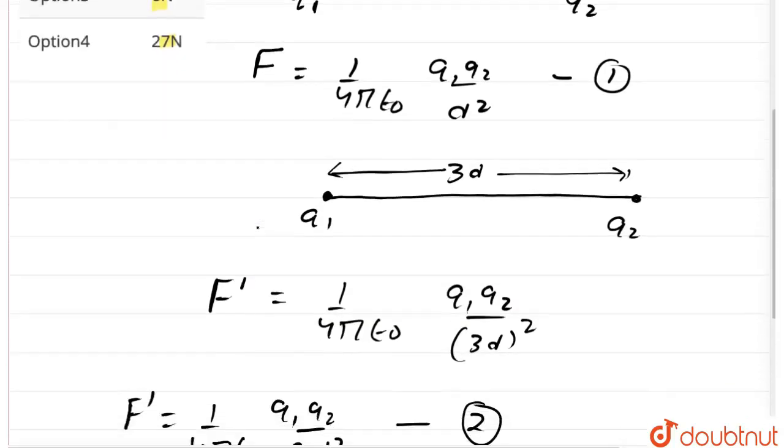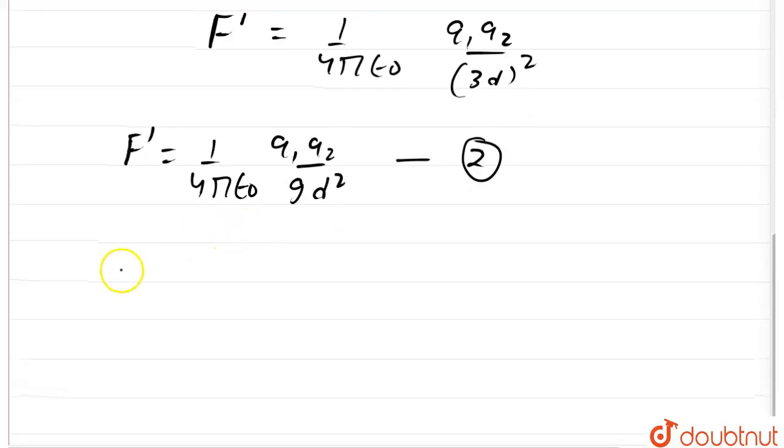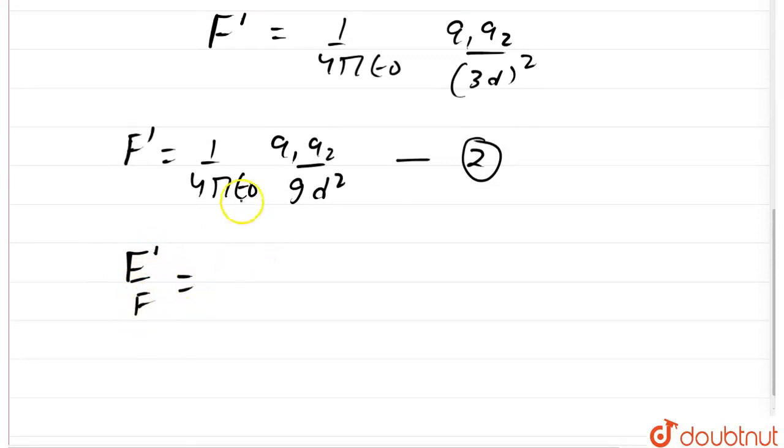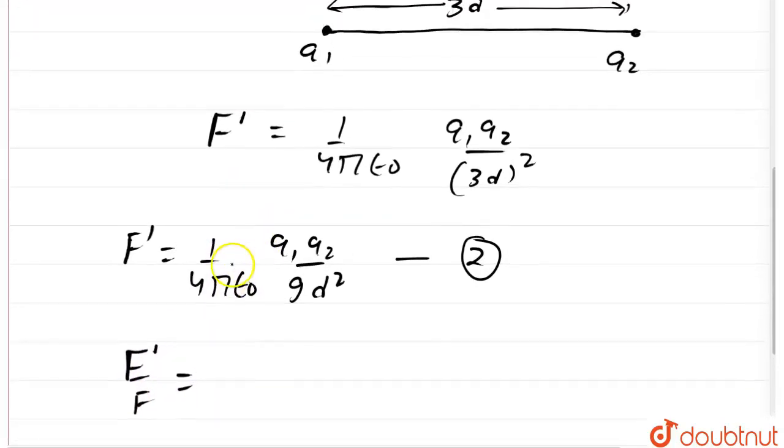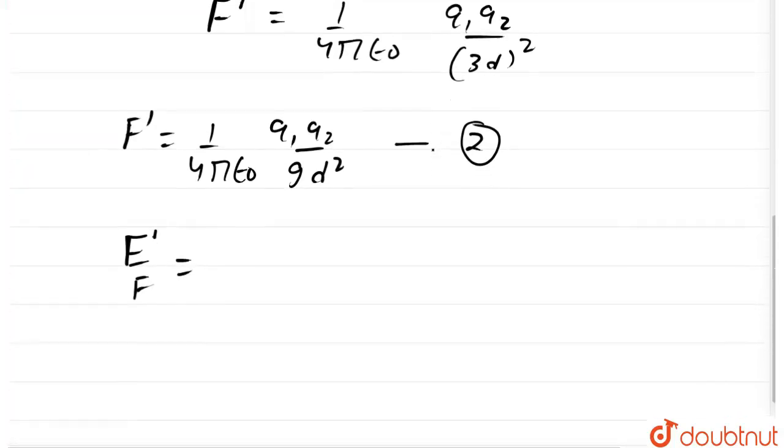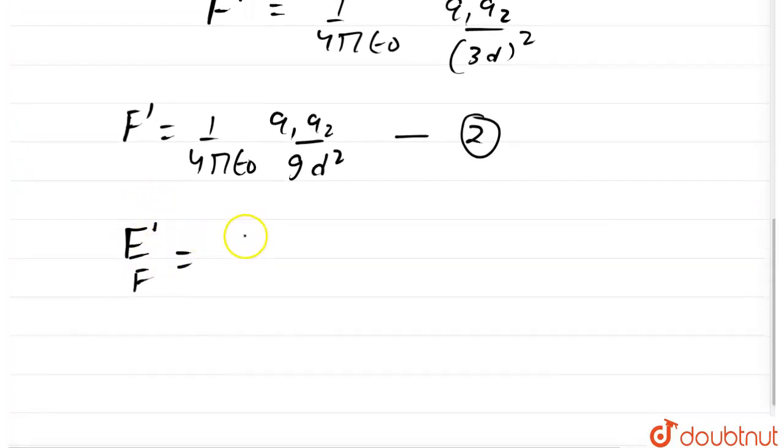Now, dividing both 1 and 2 we get, dividing 2 by 1 we get f dash upon f is equal to, now this 1 upon 4 pi epsilon 0 will get cancelled out and q1 q2 will get cancelled out.